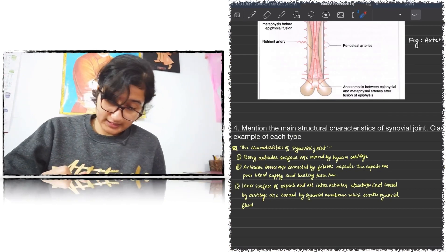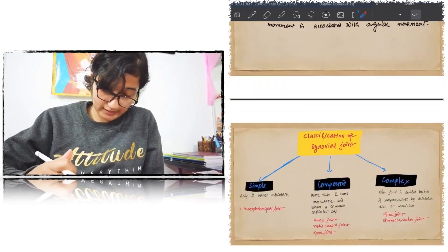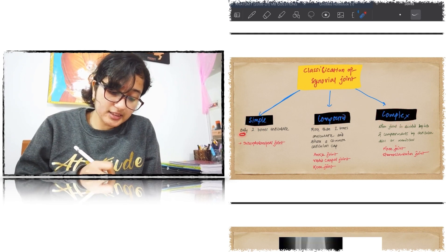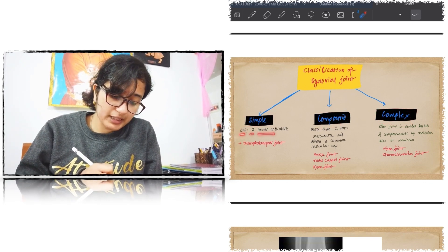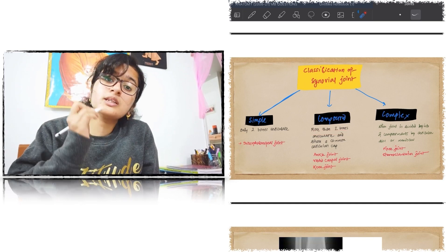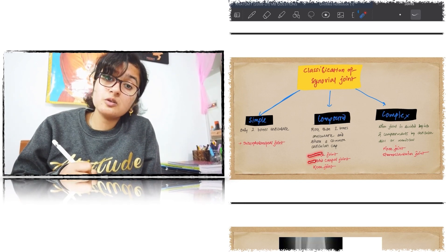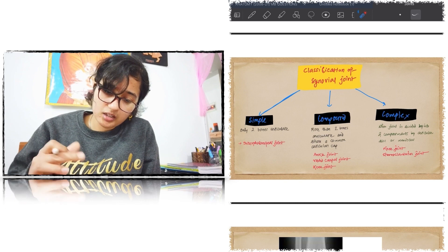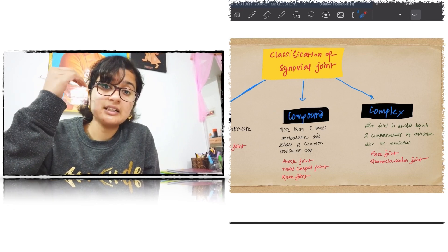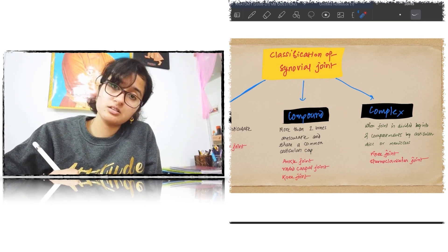The classification of synovial joints: based on structure, they can be simple, compound, or complex. A simple joint consists of only two articular bones — example: interphalangeal joints. A compound joint is formed by more than two bones sharing a common articular capsule — examples: ankle joint, radiocarpal joint, and knee joint. A complex joint is one that is partially or completely divided into two compartments by an articular disc — examples: knee joint and sternoclavicular joint.